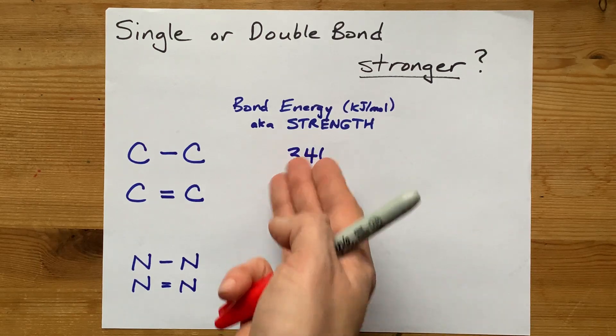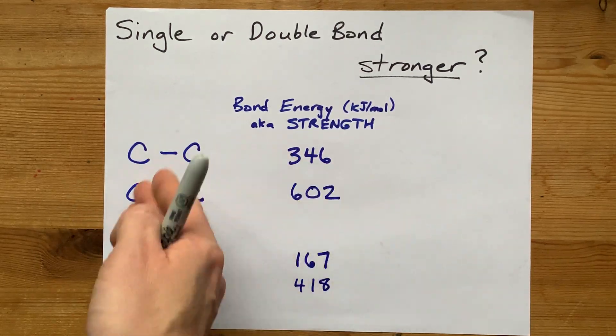That's less energy. Therefore, the single bond is weaker and the double bond is stronger.